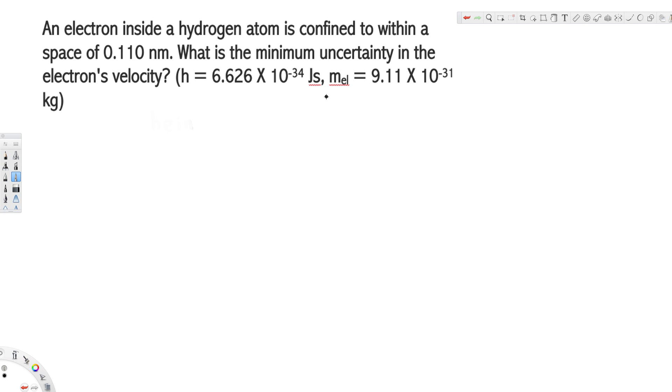What is the minimum uncertainty in the electron's velocity? To find the velocity, we are going to use the Heisenberg uncertainty principle. Let's write that down.